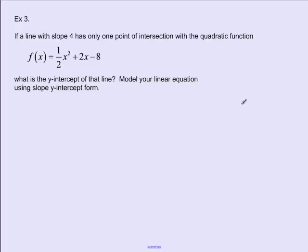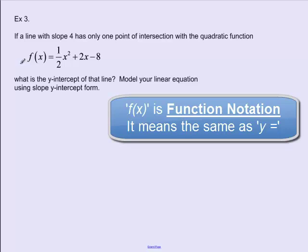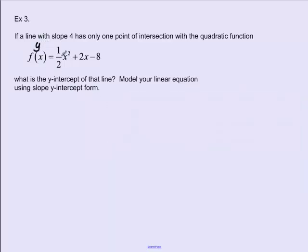Here's the last example. If a line with slope 4 has only one point of intersection with the quadratic function — given in function notation as f(x) equals one-half x squared plus 2x minus 8, which we can treat as y equals one-half x squared plus 2x minus 8 — what is the y-intercept of that line? Model the linear equation using slope-intercept form.